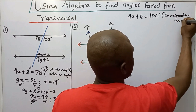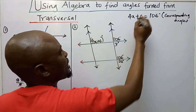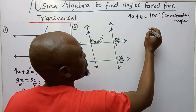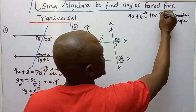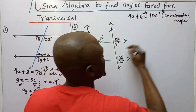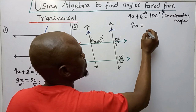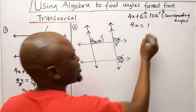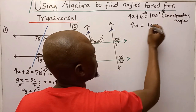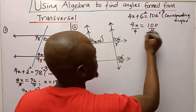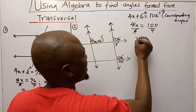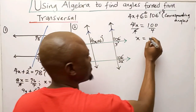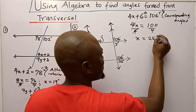The geometric reason is corresponding angles. I subtract 6 from both sides, so 4X equals 106 minus 6, which gives me 100. Dividing both sides by 4, X equals 100 divided by 4, which gives me 25 degrees.